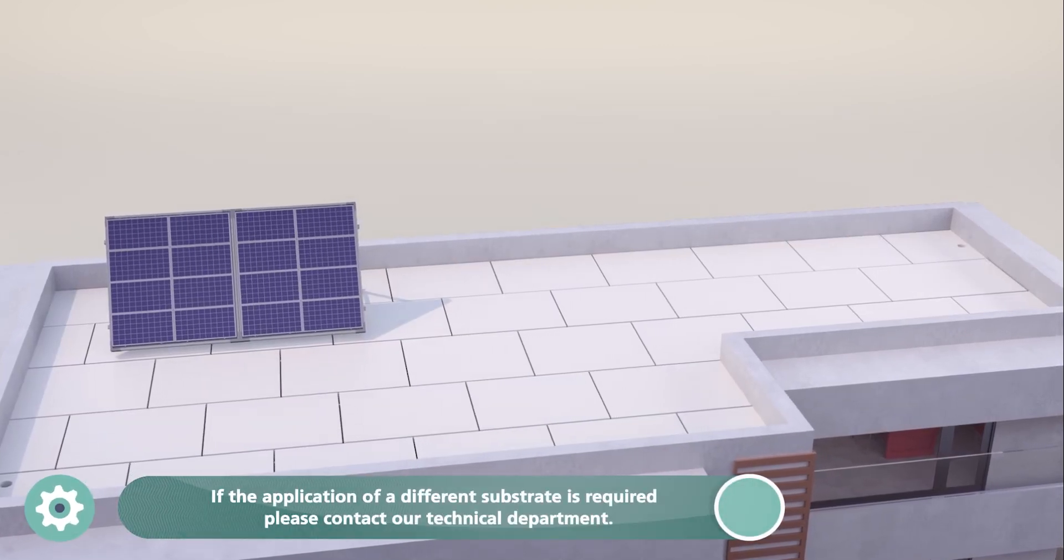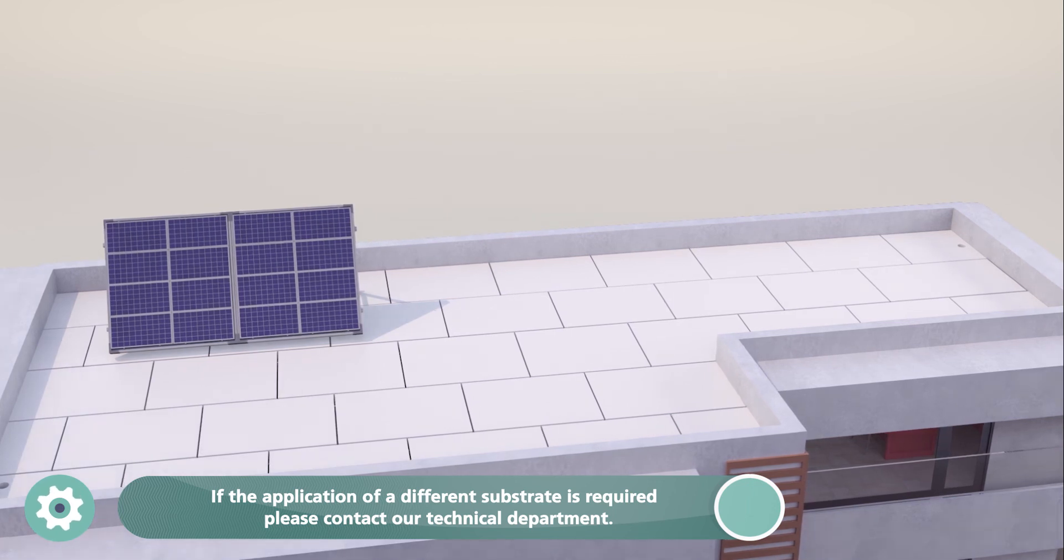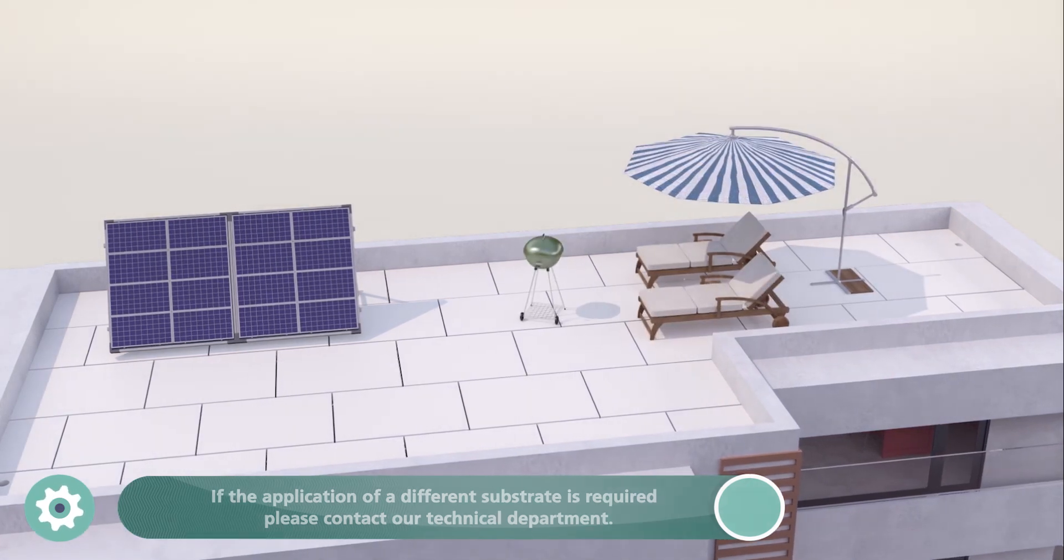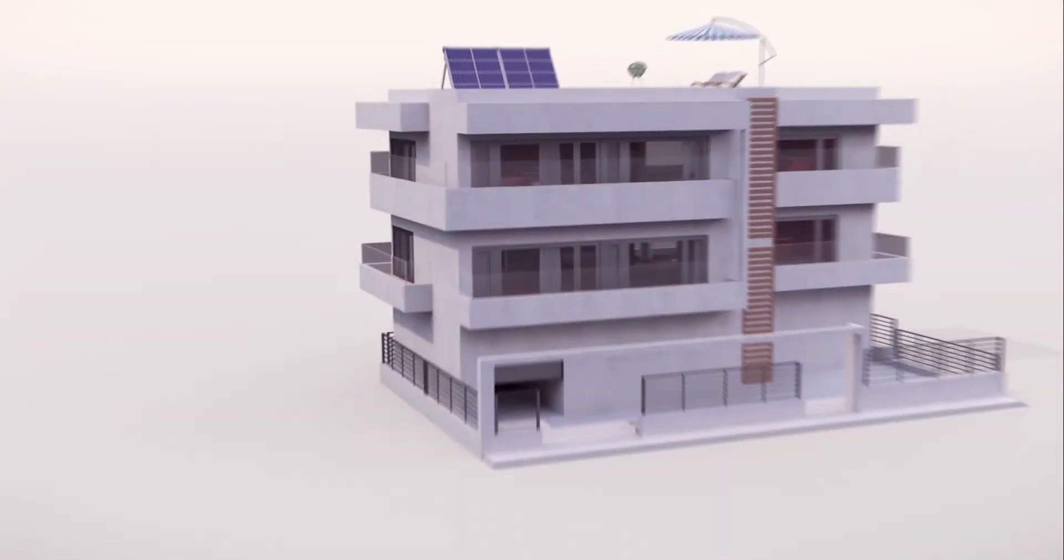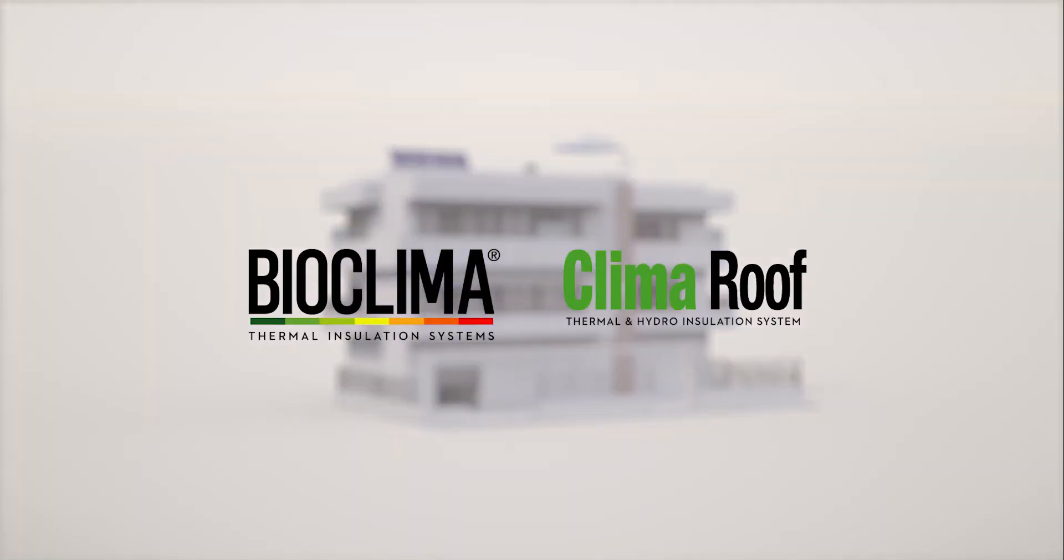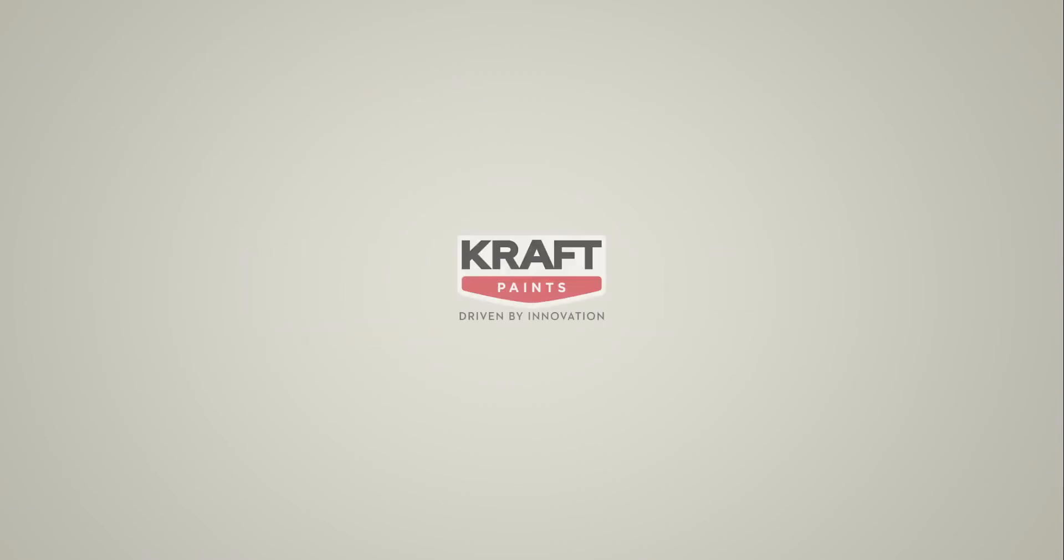If the substrate is different, please contact our technical department. Klima Roof Thermal Insulation and Waterproofing System with Kraft Paints Guarantee.